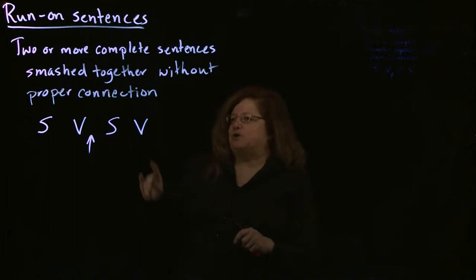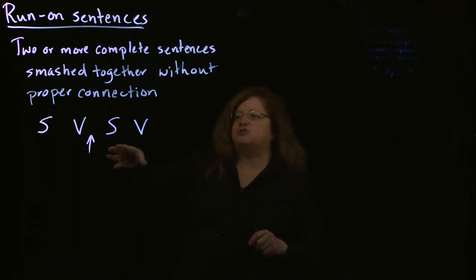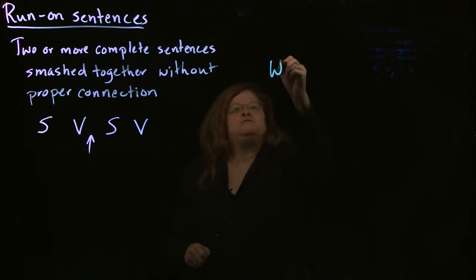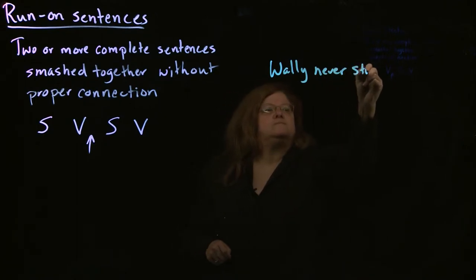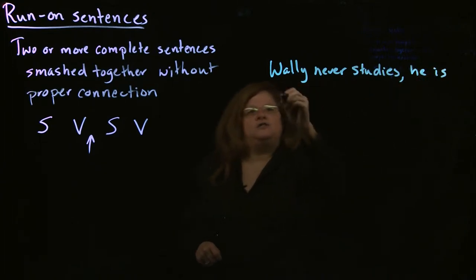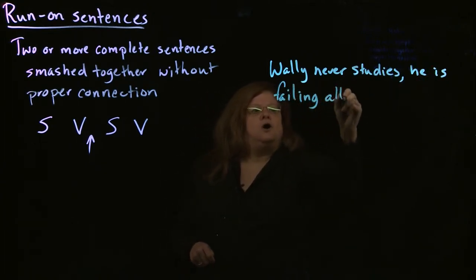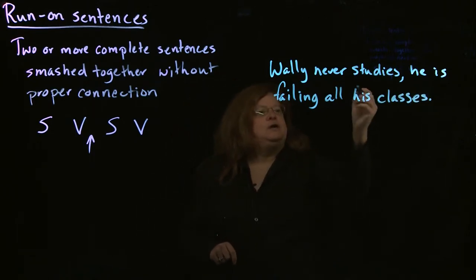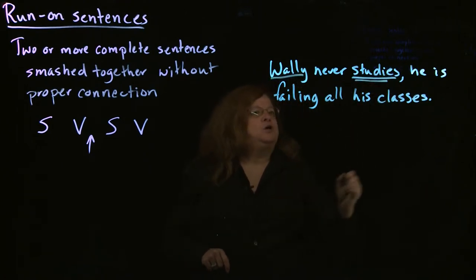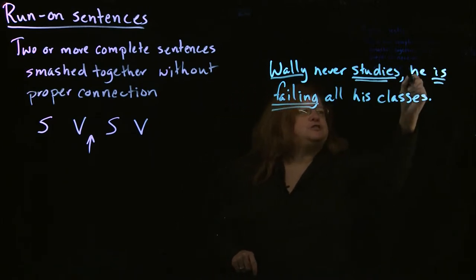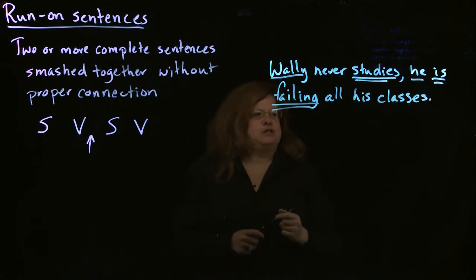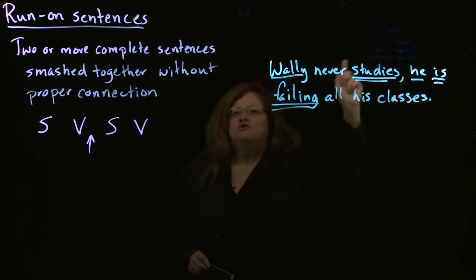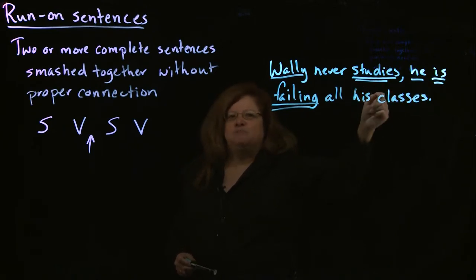Once you've looked and found your subjects and verbs, if you find there's nothing in there or nothing but a comma, then what we have is a run-on sentence. For example, I might have something like this: 'Wally never studies, he is failing all his classes.' We see we have a complete verb with its subject here, and another complete verb with the subject 'he.' So we have a complete sentence and another complete sentence, and what's connecting them is just a comma — that means we have a run-on sentence of the subspecies comma splice.